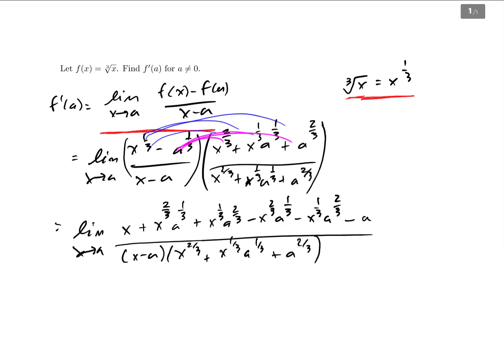From this point, I think you can see what's going to happen. We have the x to the two thirds and a to the one third subtract out. We have x to the one third, a to the two thirds subtract out. And all I'm left with is x minus a. So the x minus a in the numerator cancels out with the x minus a down here in the denominator, because it's all being multiplied together.